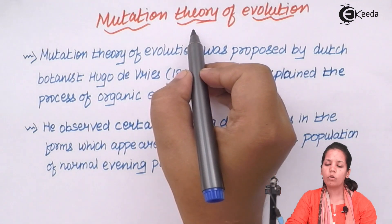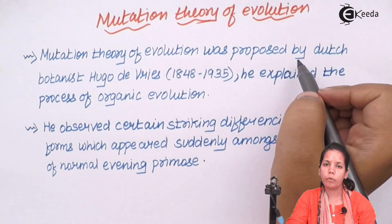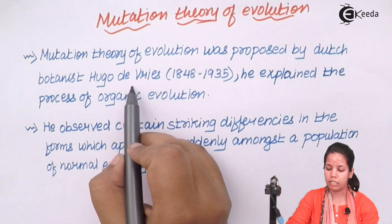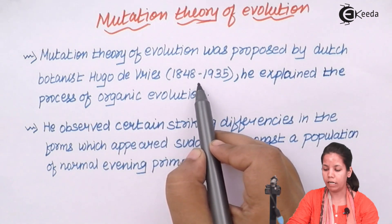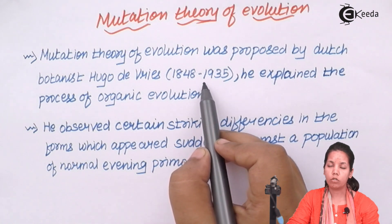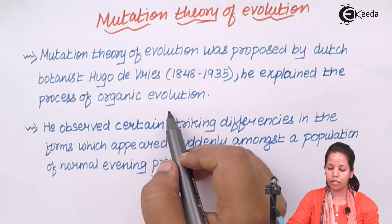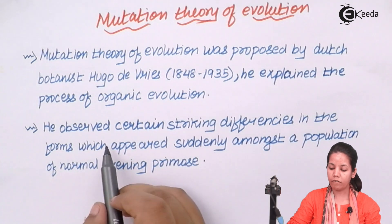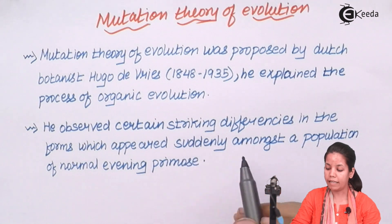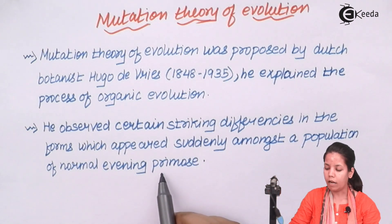According to the theory of mutation, it was proposed by Dutch botanist Hugo de Vries, who lived from 1848 to 1935. He explained that the process of evolution is a precise organic evolution. He observed certain striking features of evolution in a plant that he studied, which was the evening primrose.